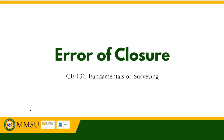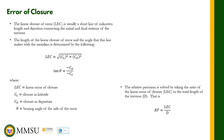So we have here the linear error of closure. A linear error of closure is usually a short line of unknown length and direction connecting the initial and final stations of the traverse.